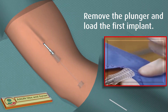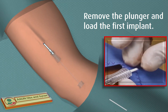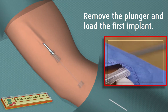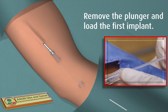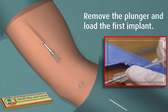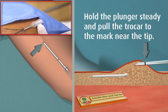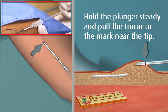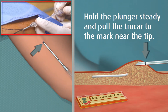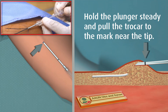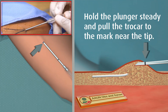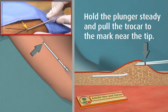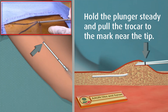Load the first implant into the trocar either with tweezers or with your fingers. Push the implant gently with the plunger to the tip of the trocar until you feel resistance, and never force the plunger. Hold the plunger steady and pull the trocar back until it touches the handle of the plunger. It is important to keep the plunger steady and not push the implant into the tissue. Do not completely remove the trocar — it is withdrawn only to the mark closest to its tip.